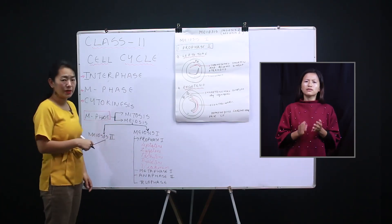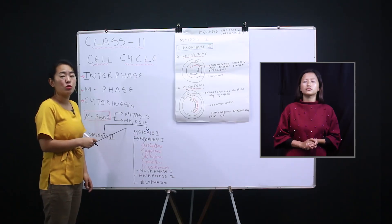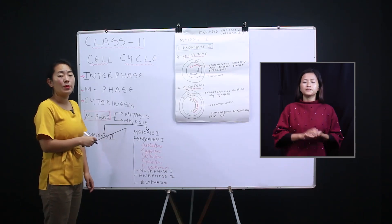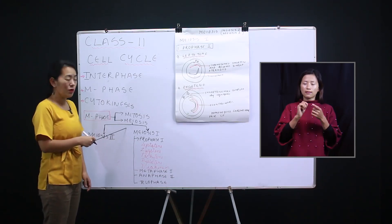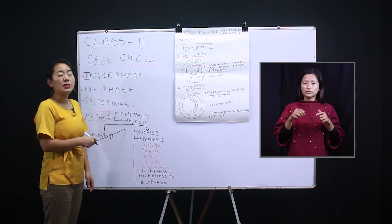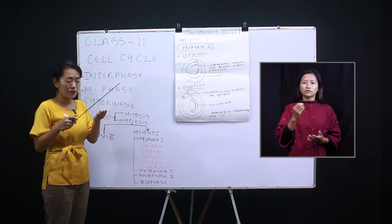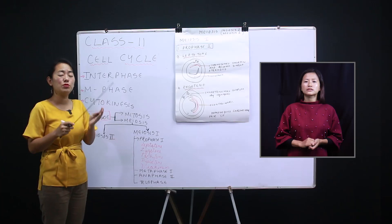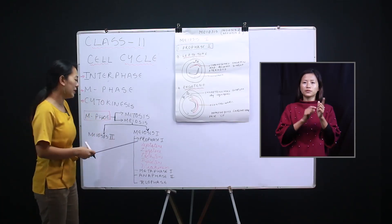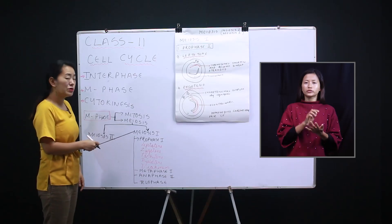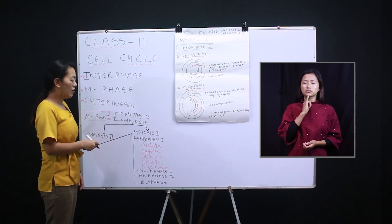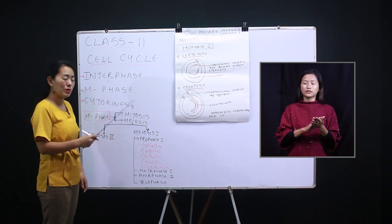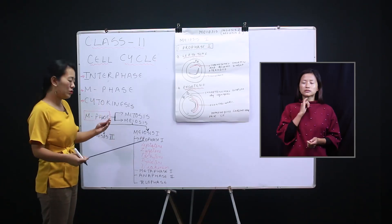Remember that meiosis is also called reductional division. We are talking about the sperm and egg of a living being, where the number of chromosomes become half. That means from a diploid organism, the cell becomes haploid. Meiosis one consists of prophase, metaphase, anaphase, and telophase, just like mitosis, but the chromosome structure is different.